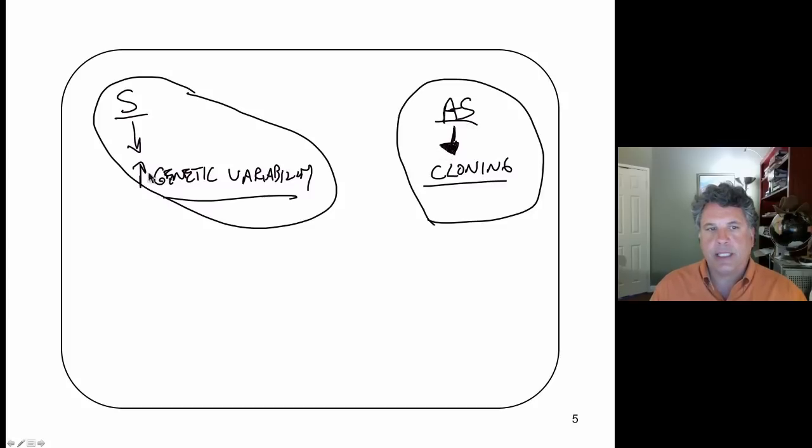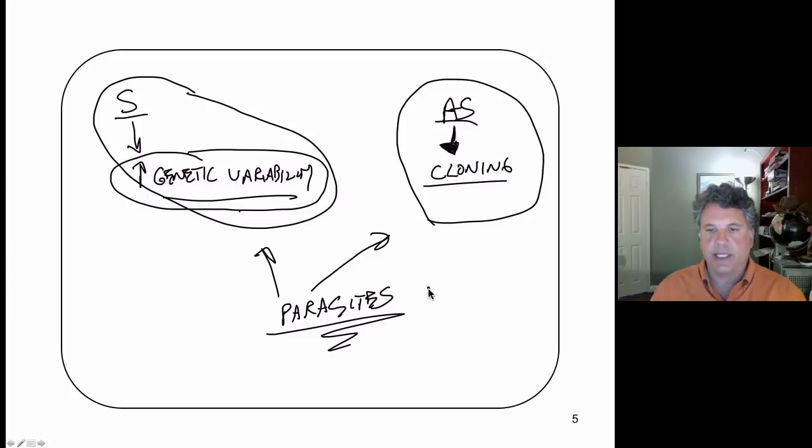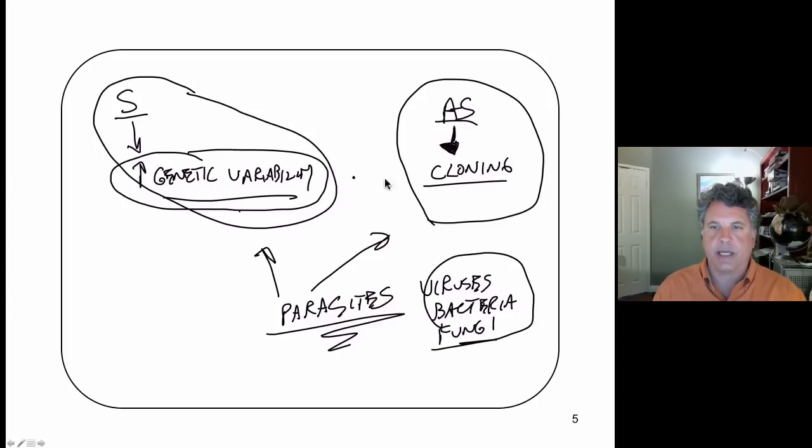But clearly sexual reproduction has had some evolutionary advantage, and that evolutionary advantage is that genetic variability is produced. How does that genetic variability endow offspring with superior competitive advantages to those produced by cloning, by asexual reproduction? The answer lies in that we have parasites. All organisms essentially have parasites: viruses, bacteria, in some cases fungi. There are organisms that parasitize other organisms.